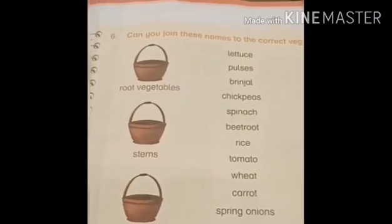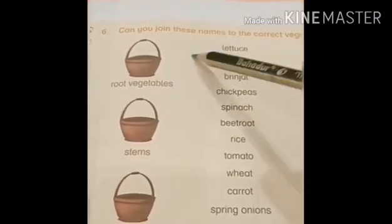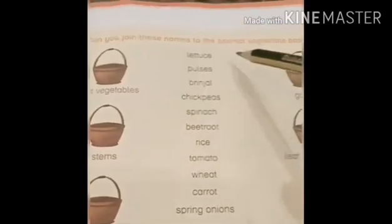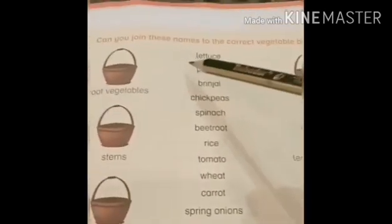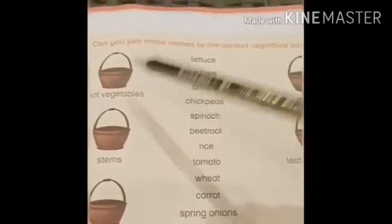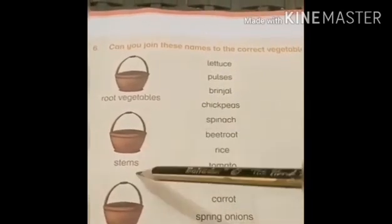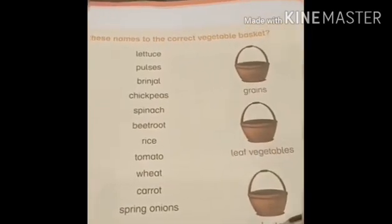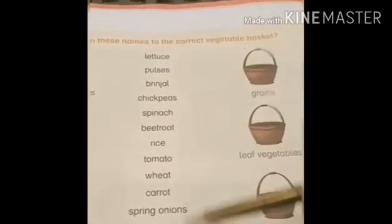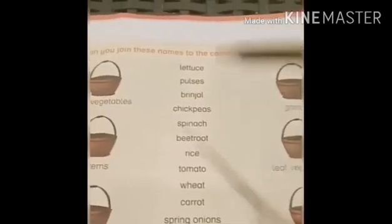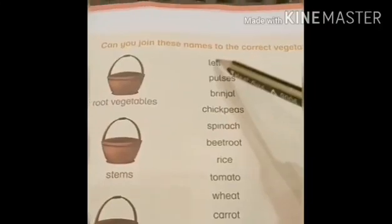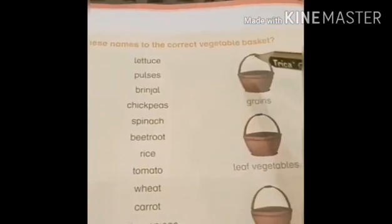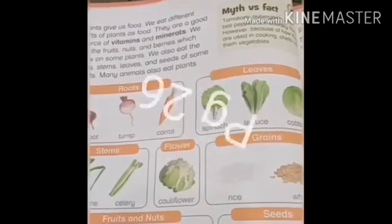Good morning students. Today we will do question number six of unit number four. Question number six is: can you join these names to the correct vegetable basket? As you can see, there are different types of baskets — fruit vegetables, stems, seeds, grains, leaf vegetables, and fruits. There is a list of some food and we have to match them with these baskets. Number one is lettuce — what do you think, where should it go?